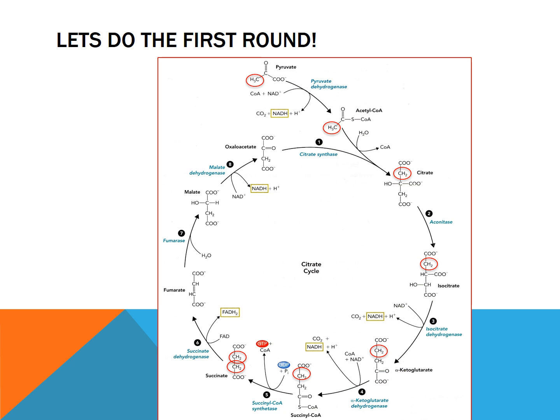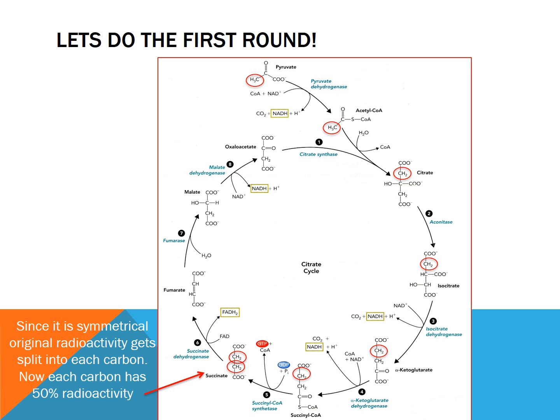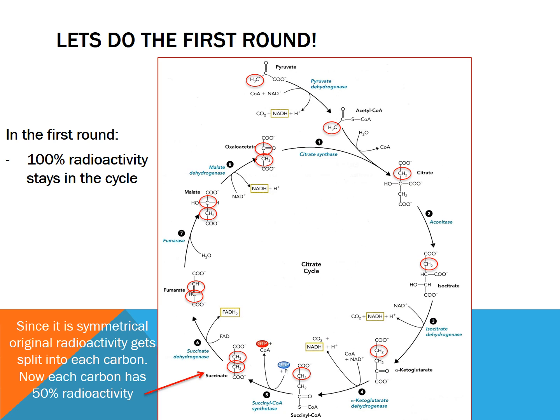So when you keep following that around, we're going to have the radioactive carbon in the methyl right there. And you can see that as soon as it hits succinate, it's symmetrical. So those two methyl carbons — there's a probability that the radioactivity can be in either. So instead of having 100% radioactivity on the steps before, here you get it split so each carbon has 50% radioactivity.